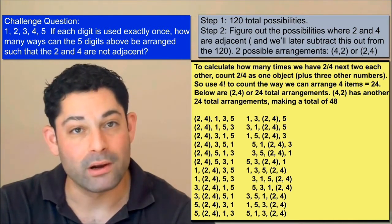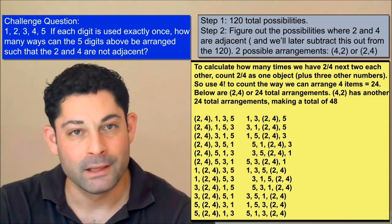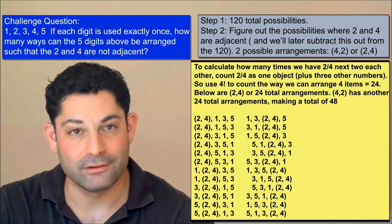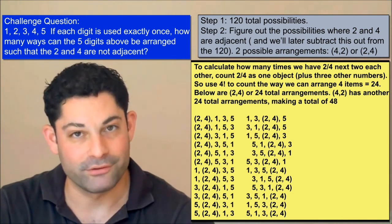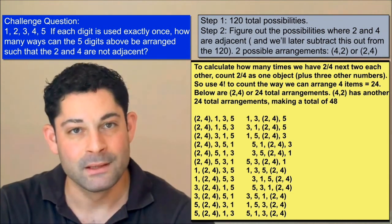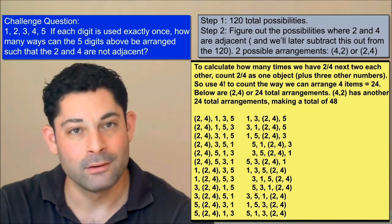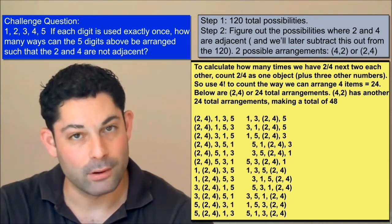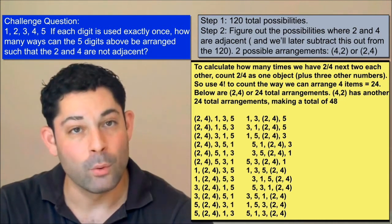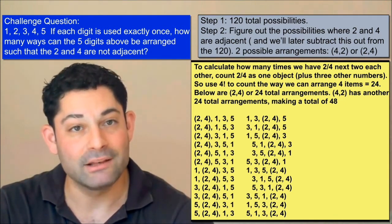Notice how the two-four moves as one object in the arrangement. The other arrangements are identical to these 24. We just reverse the two-four terms and rewrite them as four-two. This is also the number of ways in which the two is to the right of the four. So in total, there are 24 plus 24, or 48 possible ways in which the two and the four can be arranged such that they are adjacent.